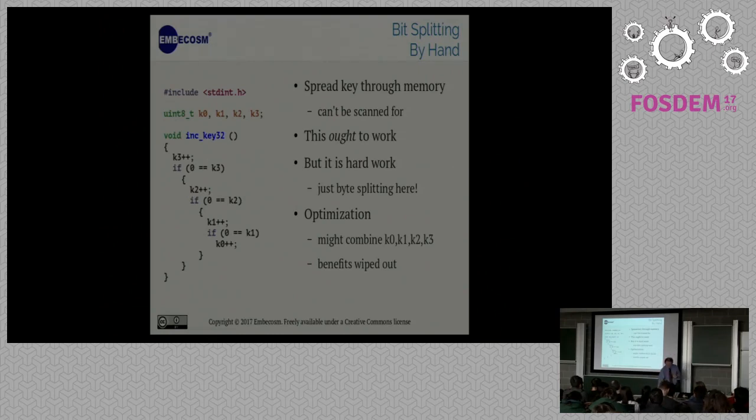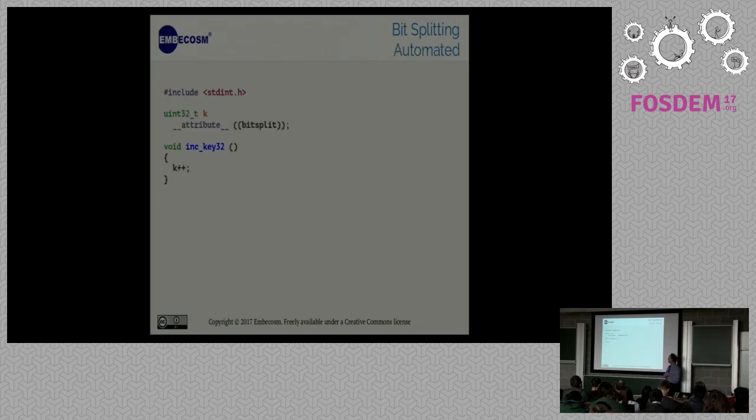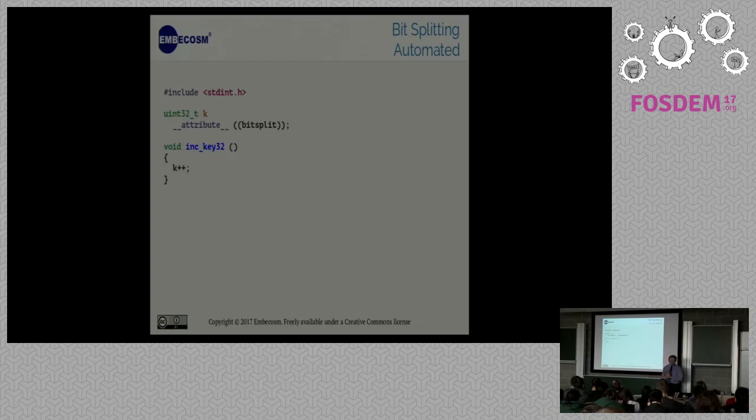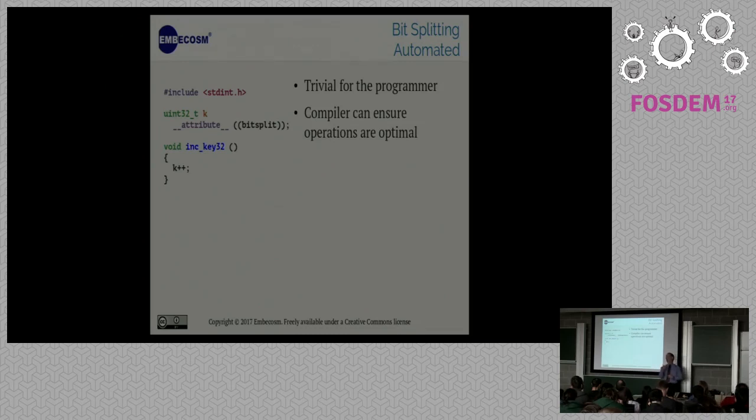Now here I've just done byte splitting. I've taken my 32-bit key, I've put it in four variables, and I'll make sure my linker scripts put those four global variables in completely different places. And then of course I now need a function to add one to that where I add it to the least significant byte and if that overflows I add it to the next significant byte. And you can see just that, it's tedious, and that's just bytes. So the idea is you spread the key through memory so it can't be scanned for. But it is hard work. I'm just adding one, look at the code I needed.